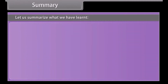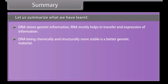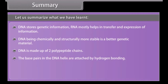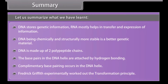Let us summarize what we have learned: DNA stores genetic information, while RNA mostly helps in the transfer and expression of information. DNA, being chemically and structurally more stable, is a better genetic material. DNA is made up of two polynucleotide chains. The base pairs in the DNA helix are attached by hydrogen bonding, and complementary base pairing occurs in the DNA helix. Frederick Griffith experimentally worked out the transformation principle.